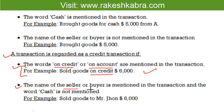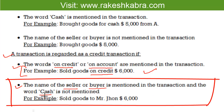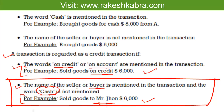The second rule for credit transactions: if the name of the supplier or buyer is mentioned but the word 'cash' is not mentioned, we consider that transaction as a credit transaction. For example, 'Sold goods to Mr. John $6,000' — the name of the buyer is given and the word cash is not used, so it means it is a credit sale and the payment is still pending.